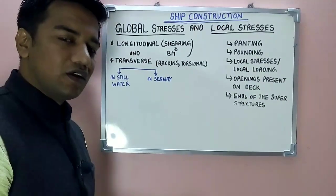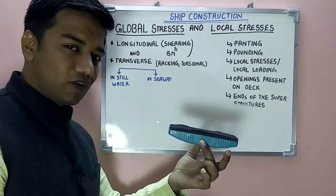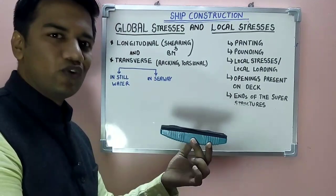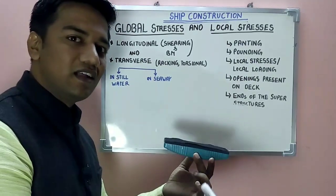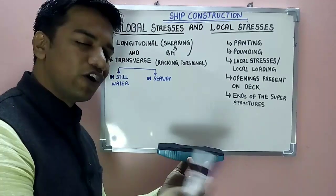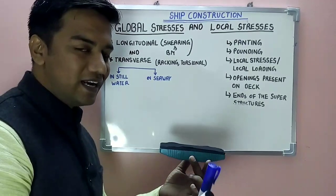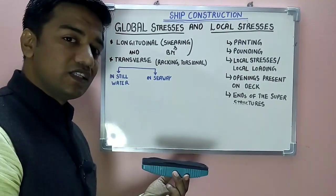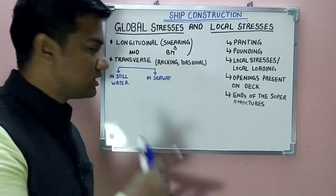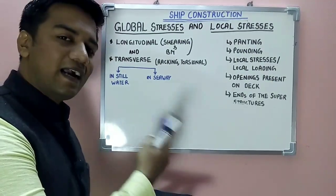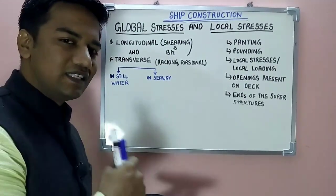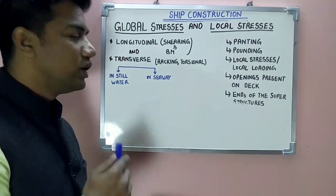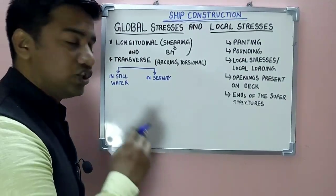Under global stresses, when stresses are acting globally they would be in the longitudinal direction and in the transverse direction. So you have longitudinal stresses and transverse stresses. Now let's see how these stresses affect the ship in still water and in seaway.